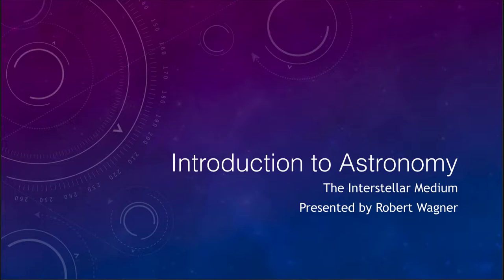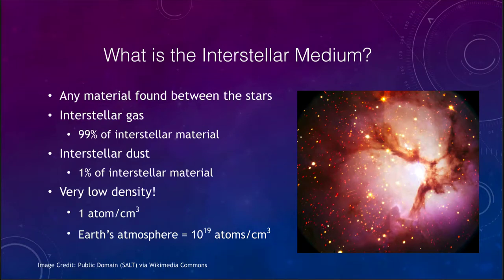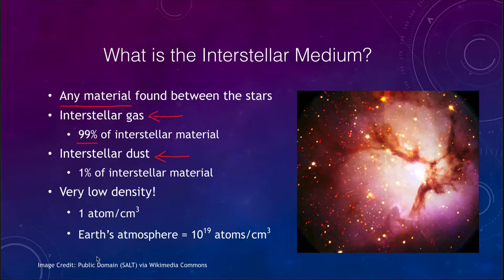So what type of material is this? The interstellar medium is any material found between the stars. It is broken down into two components: there is the interstellar gas, which is 99% of the interstellar material, and there is interstellar dust — slightly larger particles — which makes up the remaining 1%.